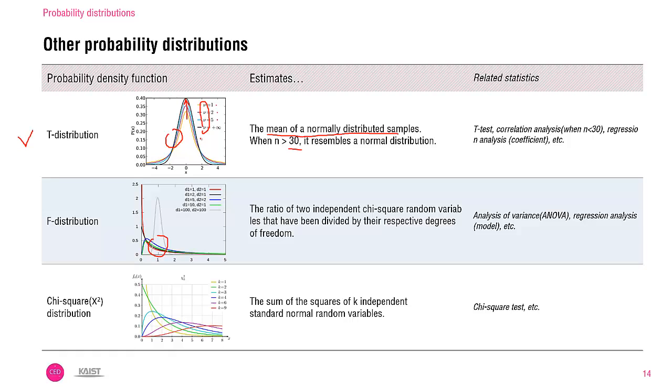In case of f-distribution and chi-square distribution, the shapes are drastically changing depending on the degree of freedom. Here the degree of freedom is mentioned using D, and you need two degrees of freedom for identifying the f-values in f-distribution, and you have one degree of freedom in chi-square distribution. Except the t-distribution, what the other two distributions are estimating is beyond the scope of this class.